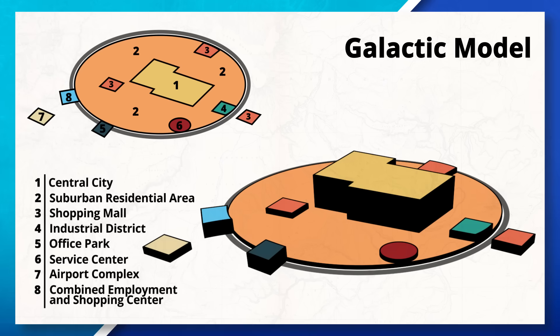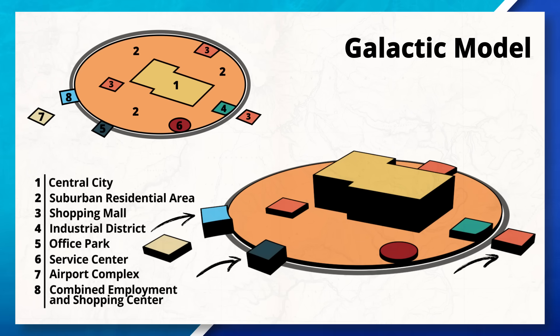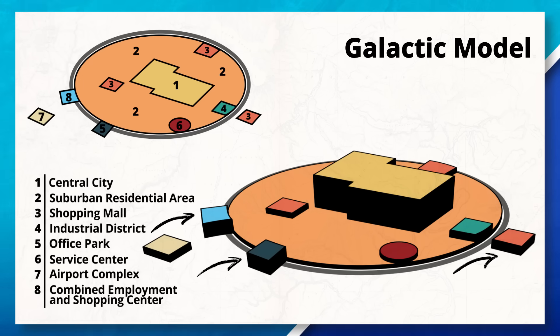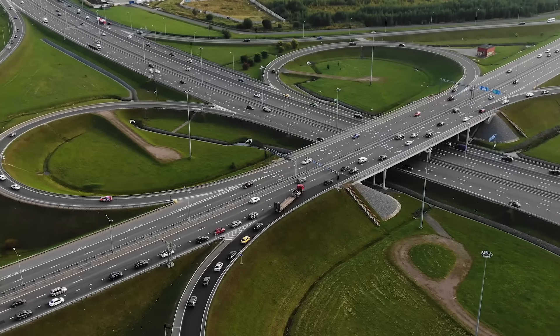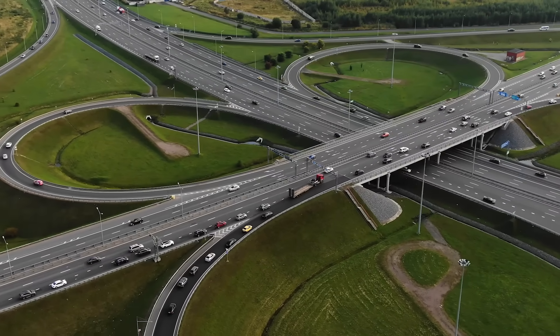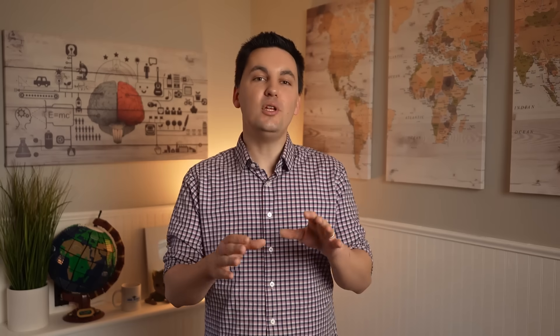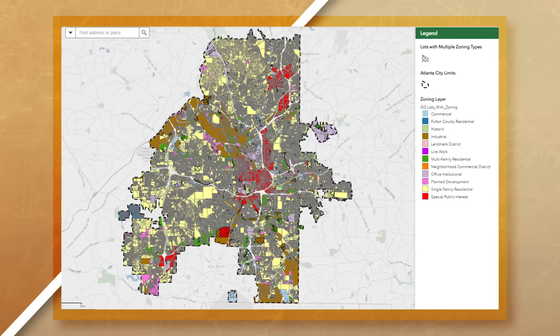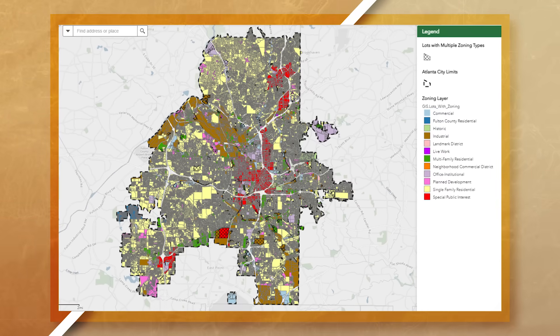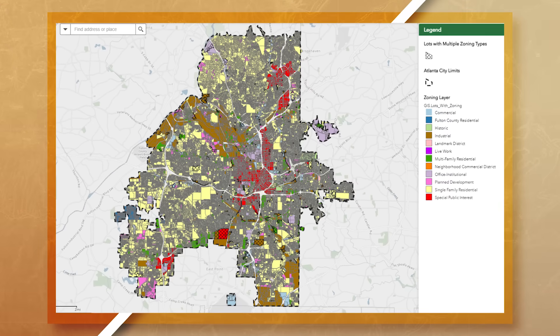Unlike our previous models, this model does acknowledge edge cities, which are located on the outside of the city limits near or on a beltway or highway. Remember, beltways allow for people to quickly move around the city and surrounding area. If you do need more help and information on edge cities, beltways, and other settlements, go back and re-watch my Unit 6 Topic 2 video. Now, while it isn't perfect, we can actually see that the city of Atlanta resembles the Galactic City model pretty well.